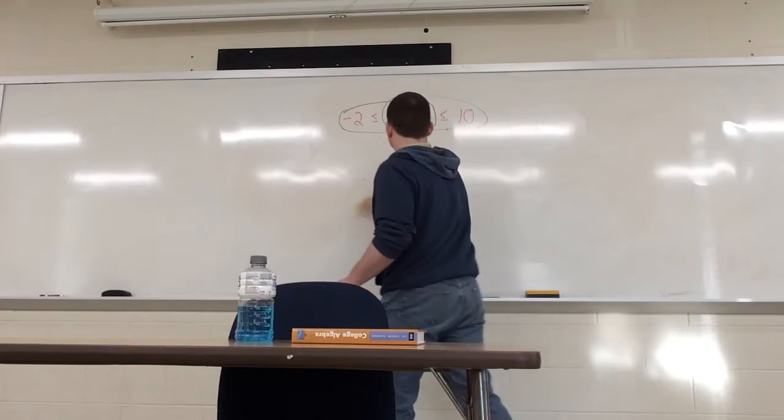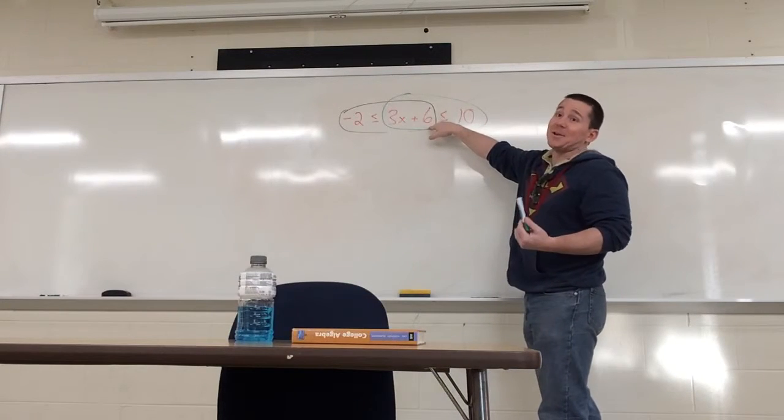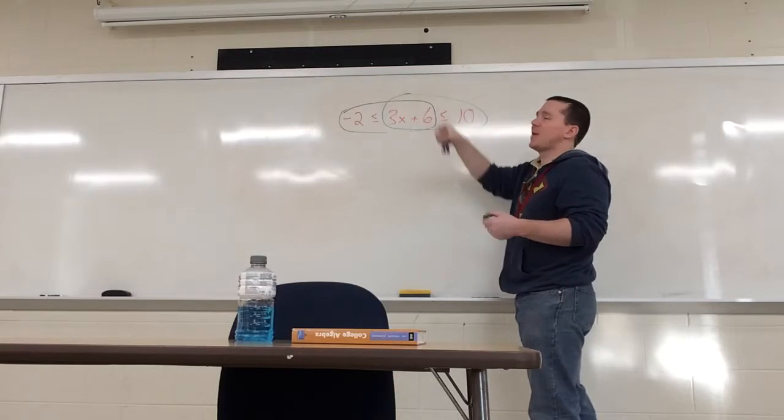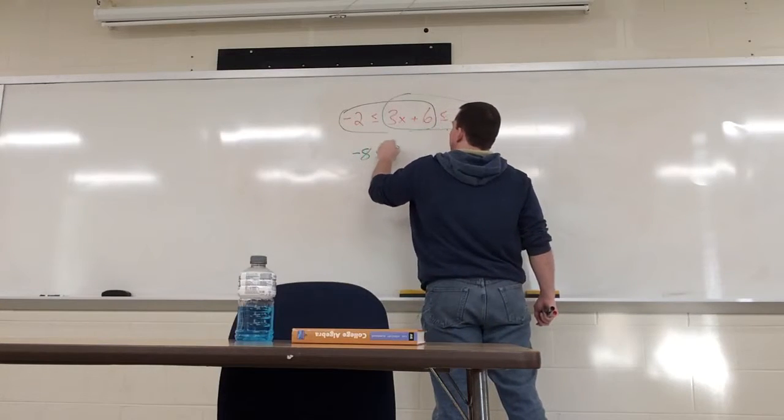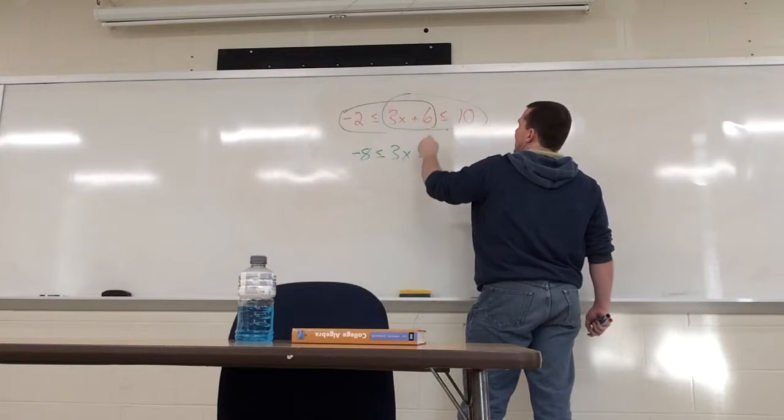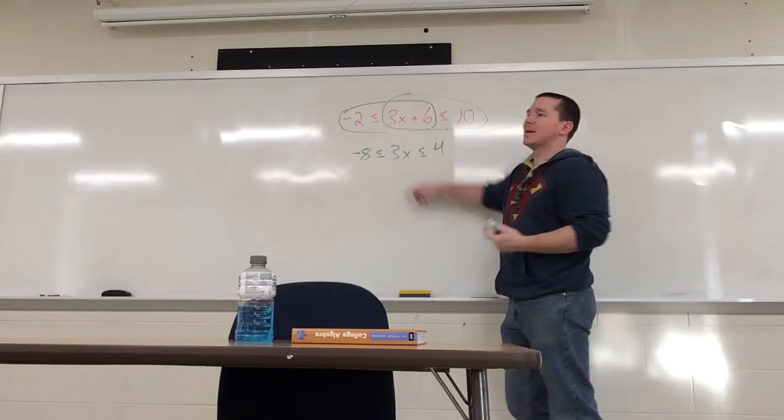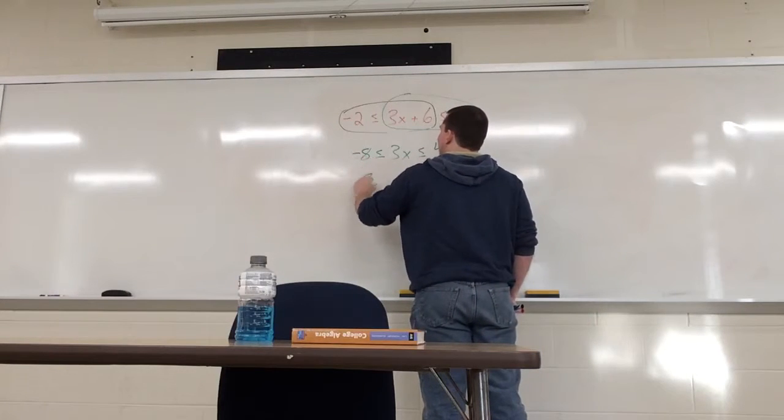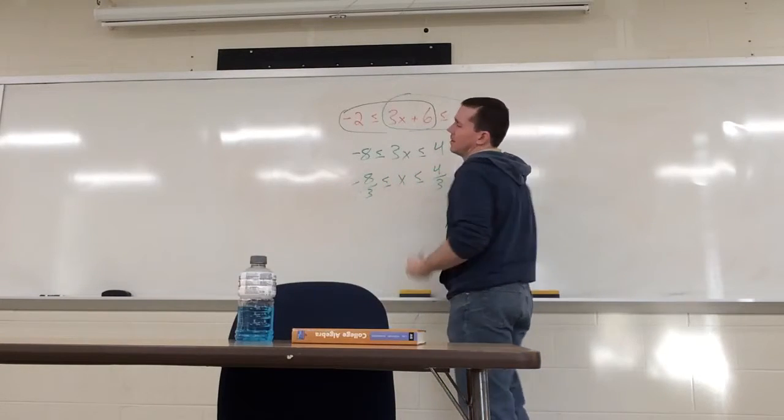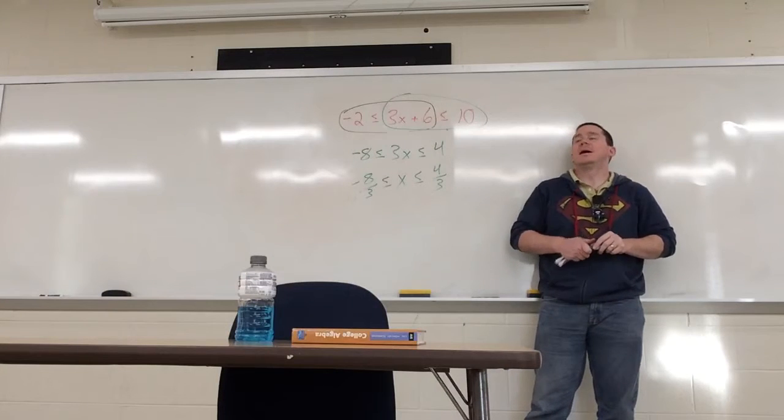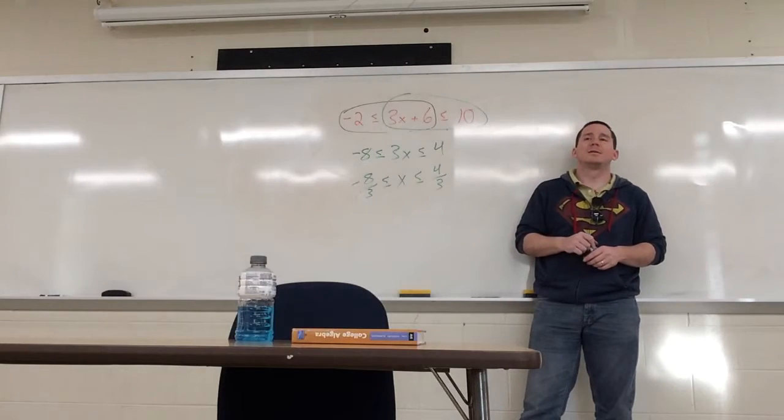Forget all that. You want to isolate x? Get rid of the 6. How do you get rid of the 6? Subtract it. Just subtract it from all 3 parts. Minus 6 is minus 8. Is less than or equal to 3x. Is less than or equal to 10 minus 6, which is 4. You want to get the x by itself? Divide the 3. From all 3 parts at once. Negative 8 over 3. Is less than or equal to x. Is less than or equal to 4 over 3. And you're done. There's your solution. And now it's nice and simple and easy to see. And it's clear that the answers are between negative 8 over 3 and 4 over 3. Got it?